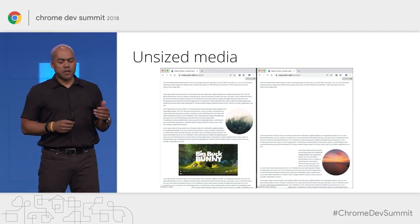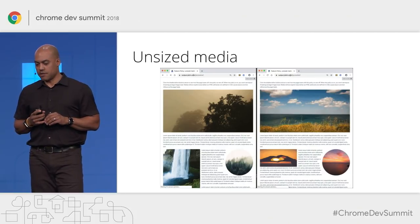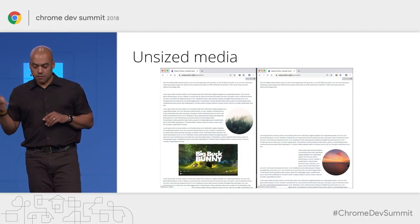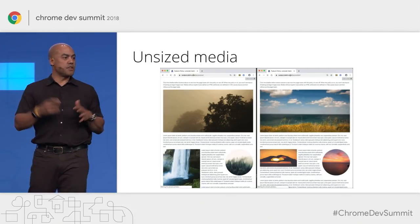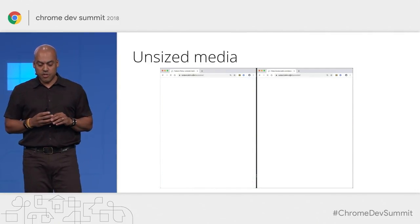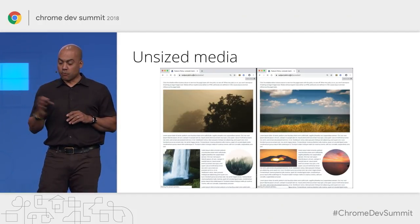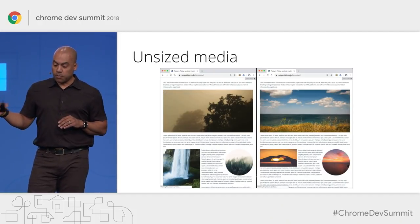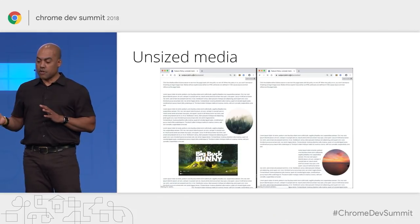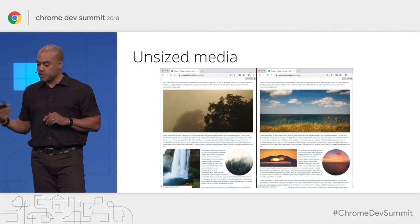Another common problem is images without explicit sizes. As we see on the left, this can cause the user experience to jump around as the browser loads in new images and resizes the page. On the right, we've applied a policy to catch this. The browser can set these images to a fixed size, keeping your user experience stable.